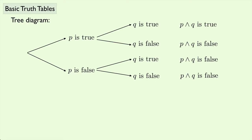Here's the tree diagram that we saw before for a conjunction. You could follow along any path in the tree diagram, say P is true and Q is false, and that would tell you that P and Q is false. This is one way of displaying all of the information in a conjunction, but it turns out there's a simpler way, and it's called a truth table.